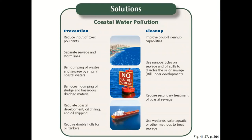Banning ocean dumping of sludge and hazardous dredged materials is important. People seem to think that if they're far enough from shore nobody's going to care, but remember, everything's connected. We have to regulate coastal development on oil drilling and oil shipping, requiring double hulls for oil tankers. If we do get to another accident, we have to improve our oil spill cleanup capabilities — our technology has not improved a whole lot. They're starting to look at nanoparticles on sewage and oil spills to dissolve the oil, but this is still under development. Those bacteria we talked about are still under development and only really functional in calm waters — if you're near a coastline, those waters are going to have breakers.